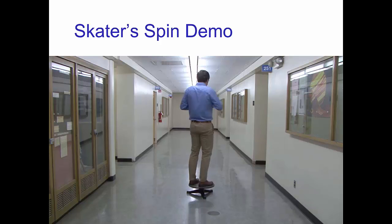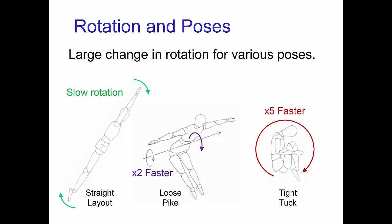For example, starting from a straight layout pose, the character's rotation doubles when she goes into a loose pike, and if she then goes into a tight tuck, the rotation is up to five times faster than in the layout pose.